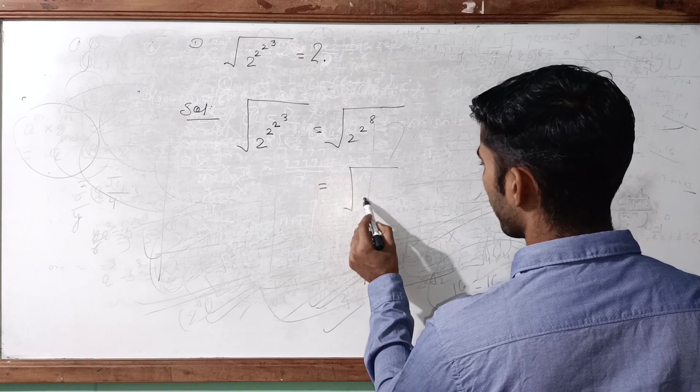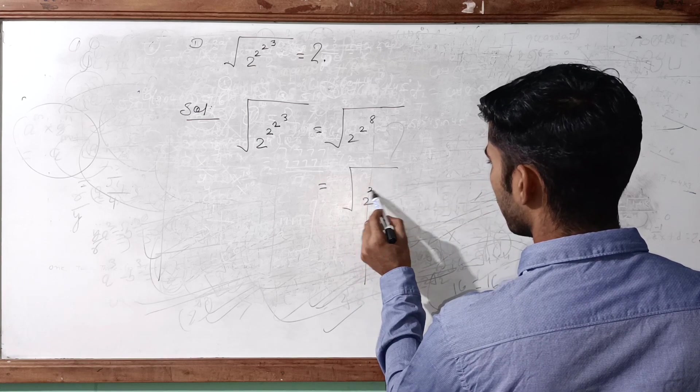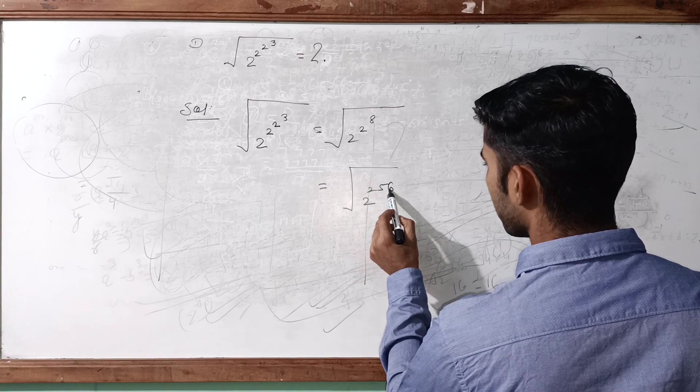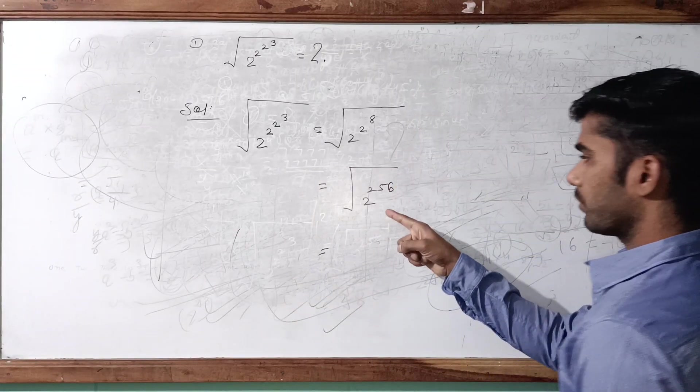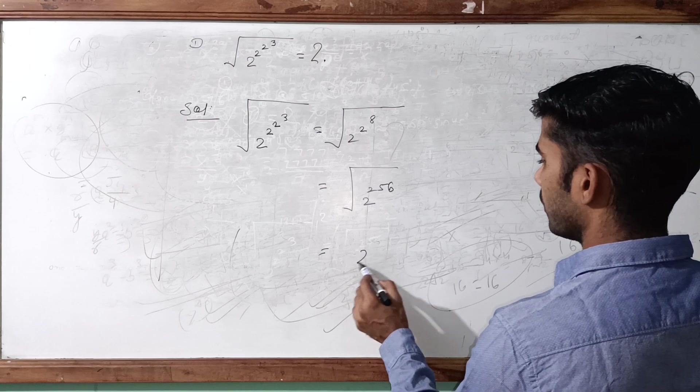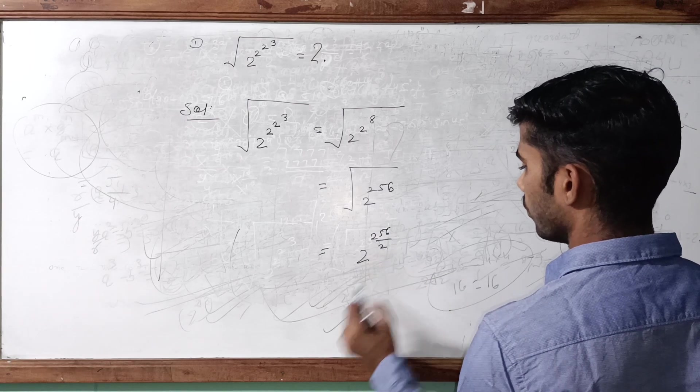So we write the value of 2 raised to 8. 2 raised to 8 is 256, then this expression can be written something like this, and this square root of 2 raised to 256 can be written as 2 raised to 256 by 2.